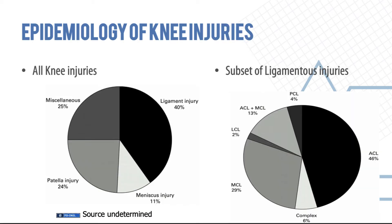Overuse syndrome is associated with occupational or recreational repetitive movement. Of all knee injuries, 40% are ligamentous — the most common type — followed by patellar or meniscal injuries, with about 25% being a mixture of other injuries. Subdividing the ligamentous injuries, ACL constitutes almost half — about 46% — which is why ACL surgeries represent the highest number of knee ligament surgeries performed.